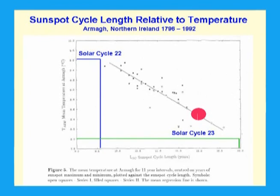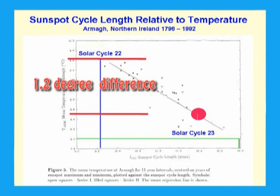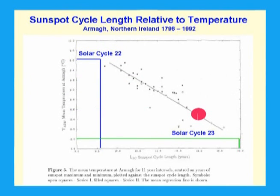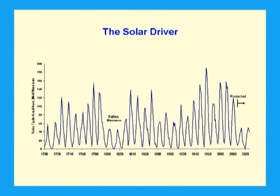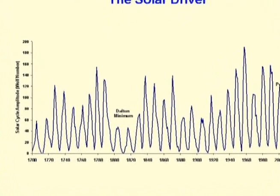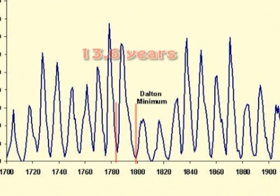If solar cycle 23 is 12 years long, it follows that the temperature at Armagh will be 1.2 degrees lower. If solar cycle 24 is as weak as a number of solar physicists are predicting, then solar cycle 23 is likely to be 13 years long or longer. Solar cycle 4, preceding the Dalton minimum, was 13.6 years long.